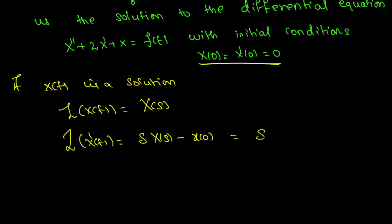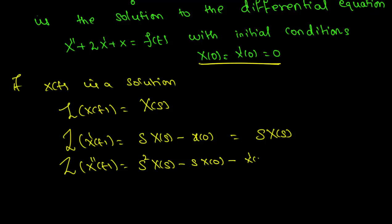So the Laplace of x prime of t is s times X of s, and the Laplace of x double prime of t is s squared times X of s minus s times x of 0 minus x prime of 0. Again these two terms are 0 because x of 0 and x prime of 0 are both 0, so this simplifies to s squared times X of s.